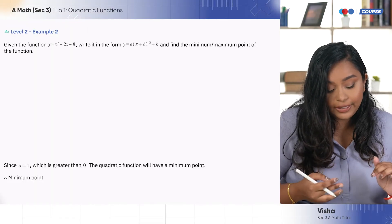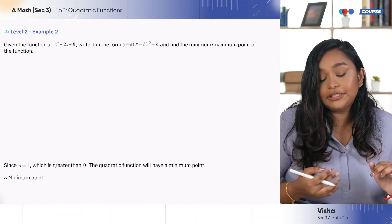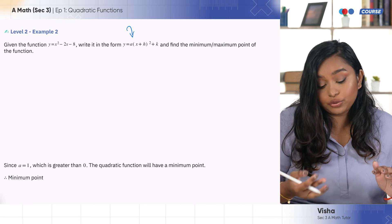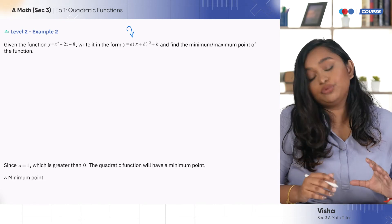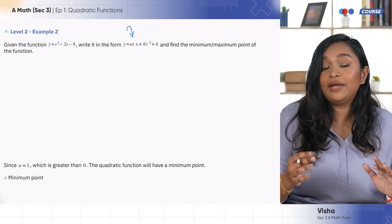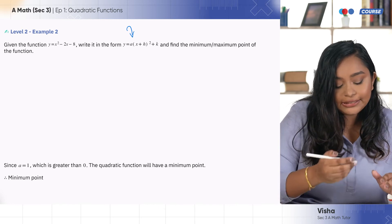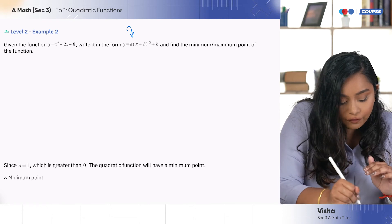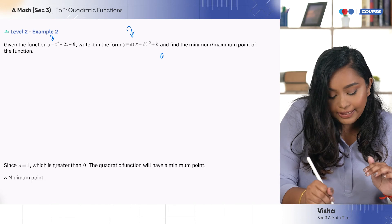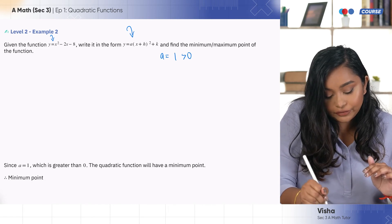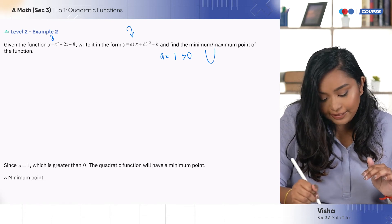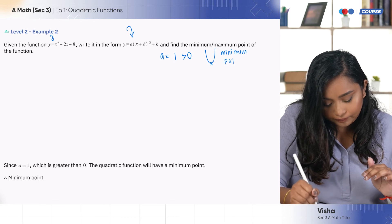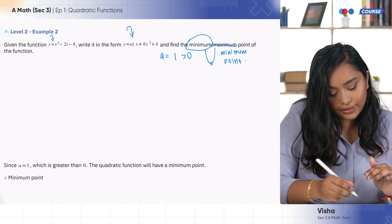Here we have the quadratic function y = 2x² − 2x − 8. We need to write it in completed square form — a(x + h)² + k — and find the maximum or minimum point. We can immediately identify whether this has a minimum or maximum: the coefficient of x² is a positive 1, so a = 1 > 0. This means it's a positive function with a smiley face, and we will have a minimum point.